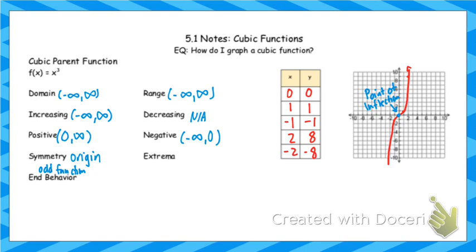Regarding extrema — we talked about relative and global mins and maxes. One thing to know here: where this graph turns, those little cubic turns, that point is not a relative min or maximum because the graph is not changing from increasing to decreasing. So the cubic parent function does not have any extrema — no relative or global mins or maxes.